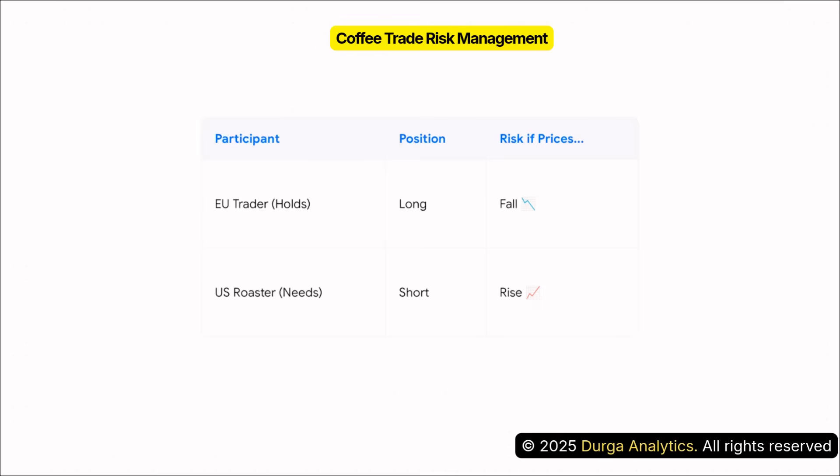On the other side, we have an unhedged US roaster who needs to buy Arabica — they are short. If the ICE Coffee C contract rallies 20%, their raw material cost explodes and their profit margin just collapses. Two different players, two different coffees, but they are two sides of the exact same price risk coin.